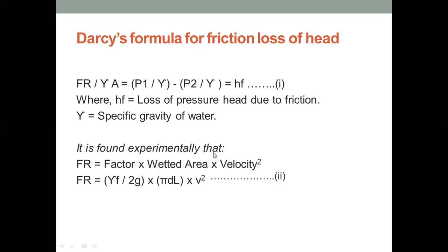It is found experimentally that the frictional resistance equals the friction factor weighted area into the square of the velocity. So frictional resistance is denoted by equation 2. We get the equation to find out the loss of pressure head, that is HF.